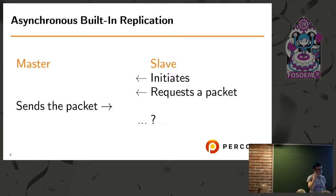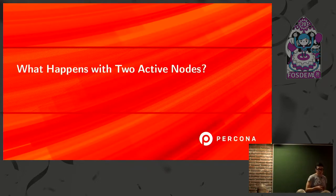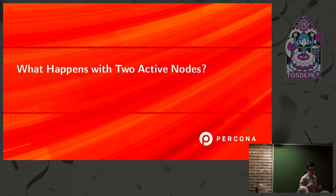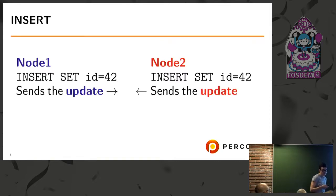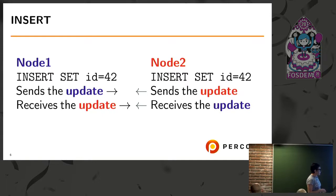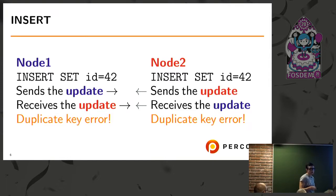For example, if master and slave table definitions are different, that's a problem even for active-passive configuration. But with two active nodes, we have more issues. With two nodes trying to insert a row with the same ID — say, 42 — once each insert happens, they both send updates to each other, both receive the update, apply it, and both nodes get a duplicate key error because they already inserted this row. At this point, replication stops.